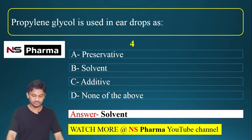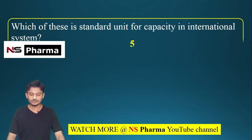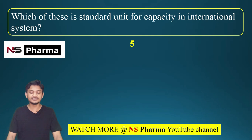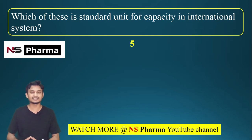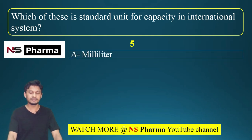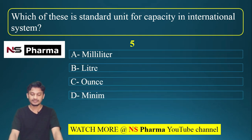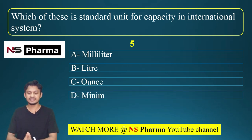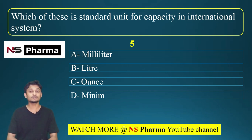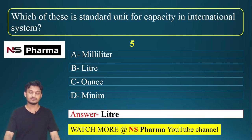Question number 5: which of these is the standard unit for capacity in the international system? Options are milliliter, litre, ounce, or minute. The correct answer is option B, litre. Litre is the SI unit of capacity.